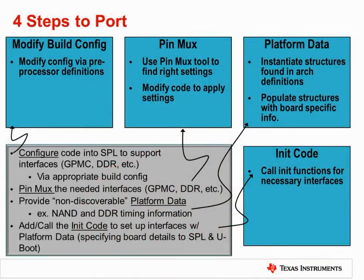Here we see the four steps to porting uBoot or the Linux kernel to a custom board. The first step is to modify the build configuration. The build configuration file specifies which interfaces will be supported by the uBoot build. If a custom board adds a new interface that was not present in the previous version, this interface will need to be added into the build configuration file. Note that this step only selects the interfaces that will be built into the image, and does not include the porting of peripheral driver support.